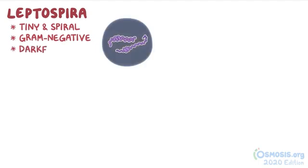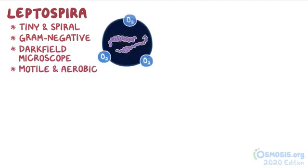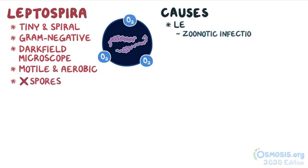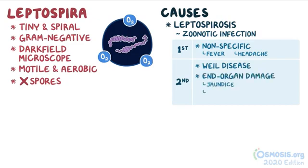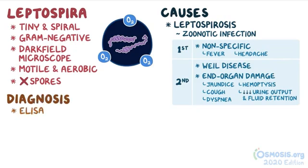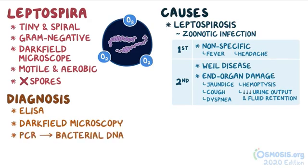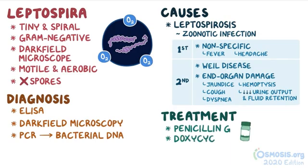As a quick recap: Leptospira is a genus of tiny spiral gram-negative bacteria that can be seen under a dark field microscope. It's a motile and aerobic bacteria, and it doesn't form spores. Leptospira causes a zoonotic infection called leptospirosis, which has two phases. During the first phase, there are nonspecific symptoms like fever and headache. During the second phase, also called Weil's disease, there may be signs of end-organ damage like jaundice, cough, dyspnea, hemoptysis, reduced urine output, and fluid retention, depending on the affected organs. Diagnosis is done with ELISA, by visualizing the bacteria under dark field microscopy, or with PCR to detect bacterial DNA. Treatment is done with penicillin G or doxycycline.